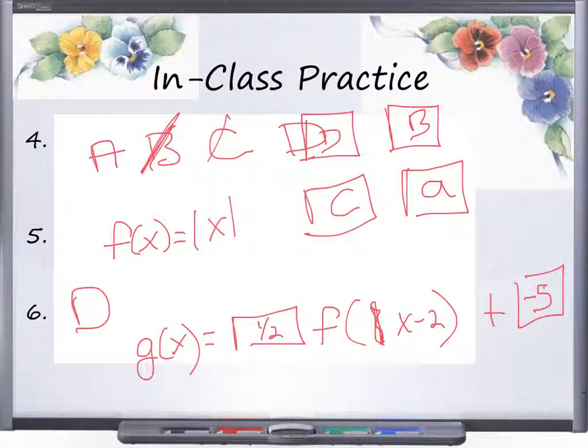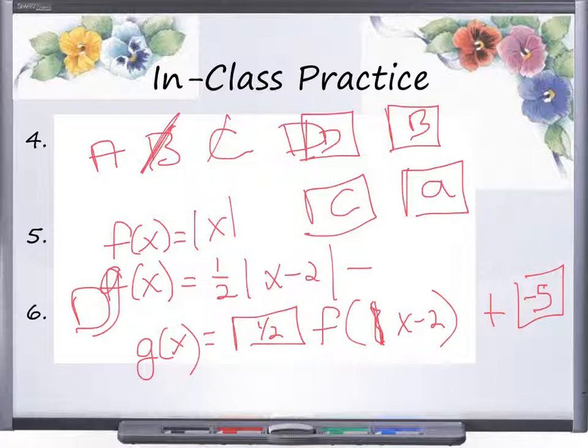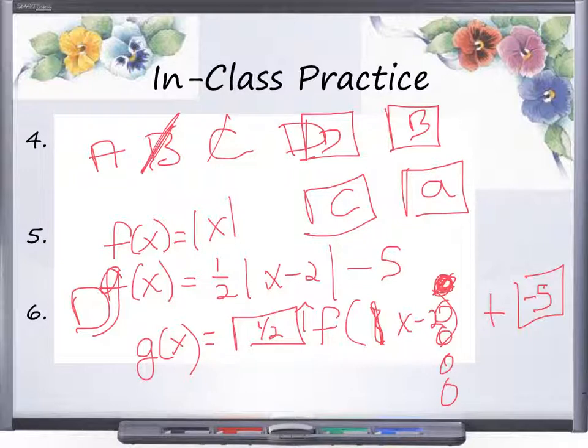B, describe the sequence of transformations from F to G. Well, what we had was, this is G of X, is one-half absolute value of X minus two minus five. Well, this is my horizontal translation. So it shifts two units right because we flipped the sign. It's not negative, positive. So in the positive direction, which is to the right. So that means our very first circle we would fill in. Negative five on the end is shifting it five units downward. That's affecting the Y. So five units downward is my third.